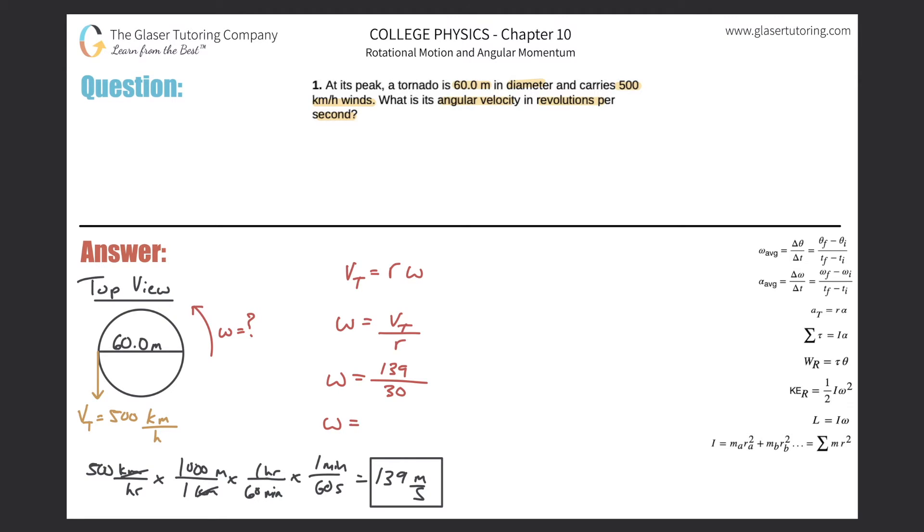And just now throwing that into the calculator, I'm going to use the exact value on the top, 138.888 from the calculator, so it comes out to be an angular velocity of about 4.63 radians per second. That sounds good.